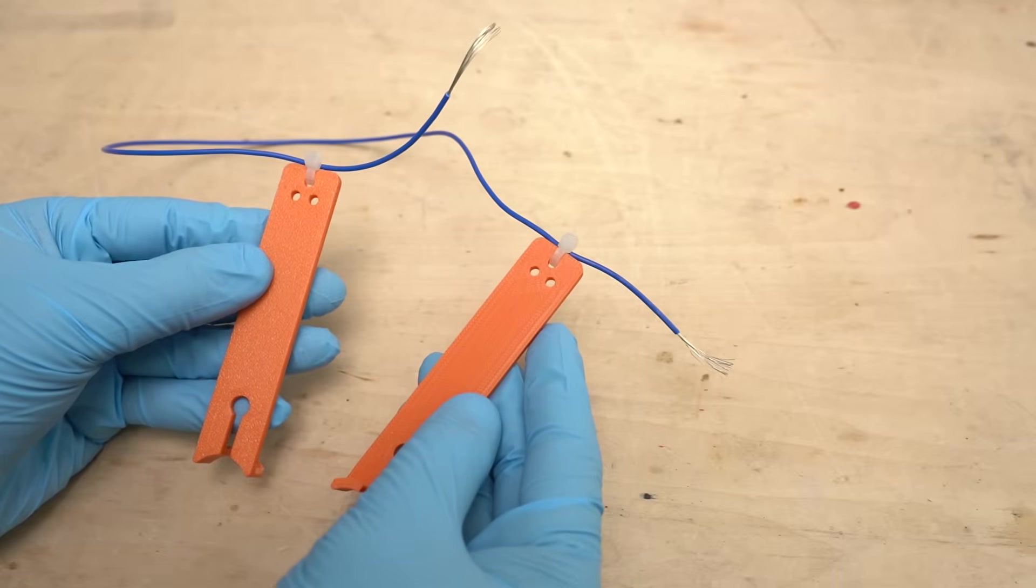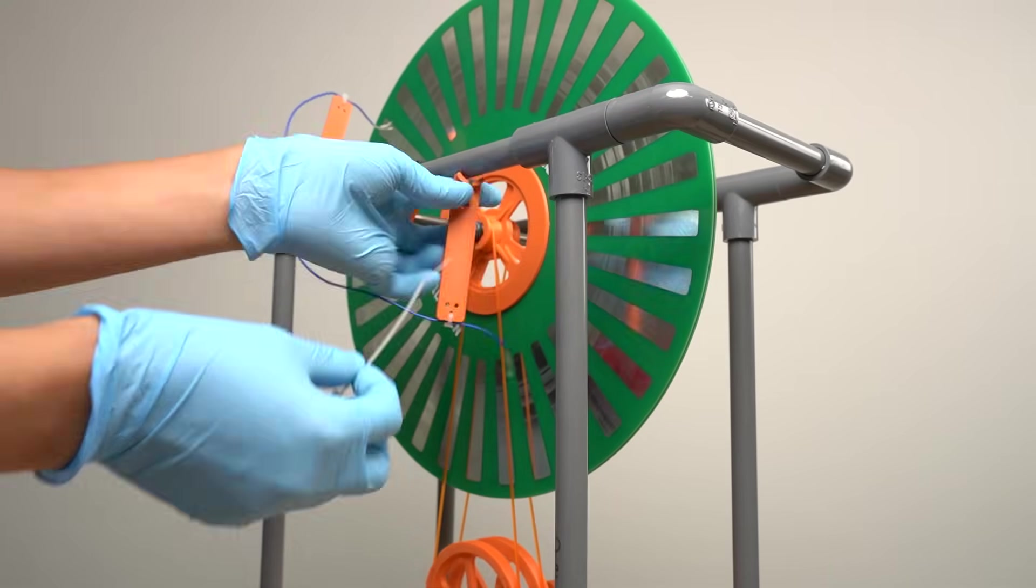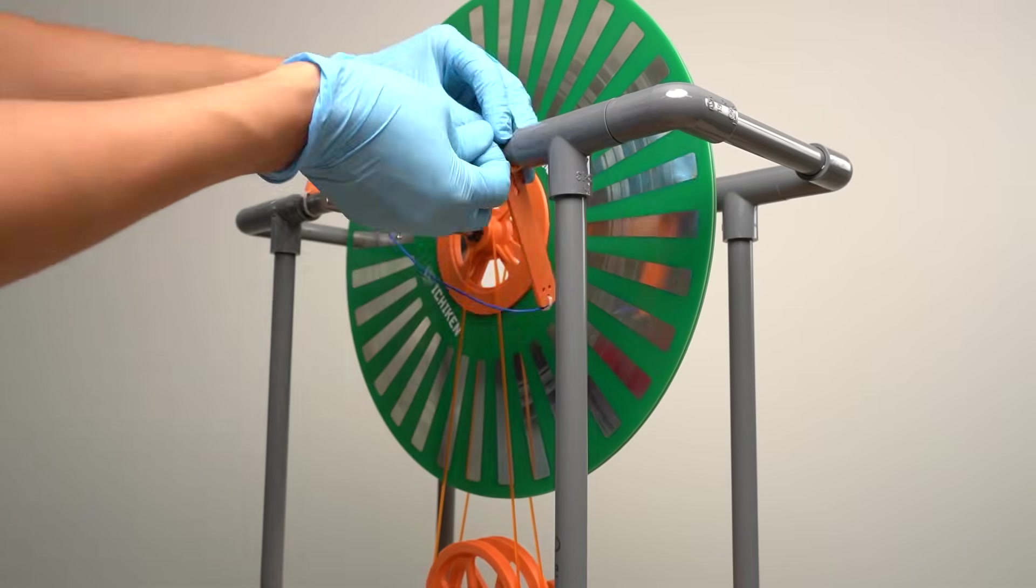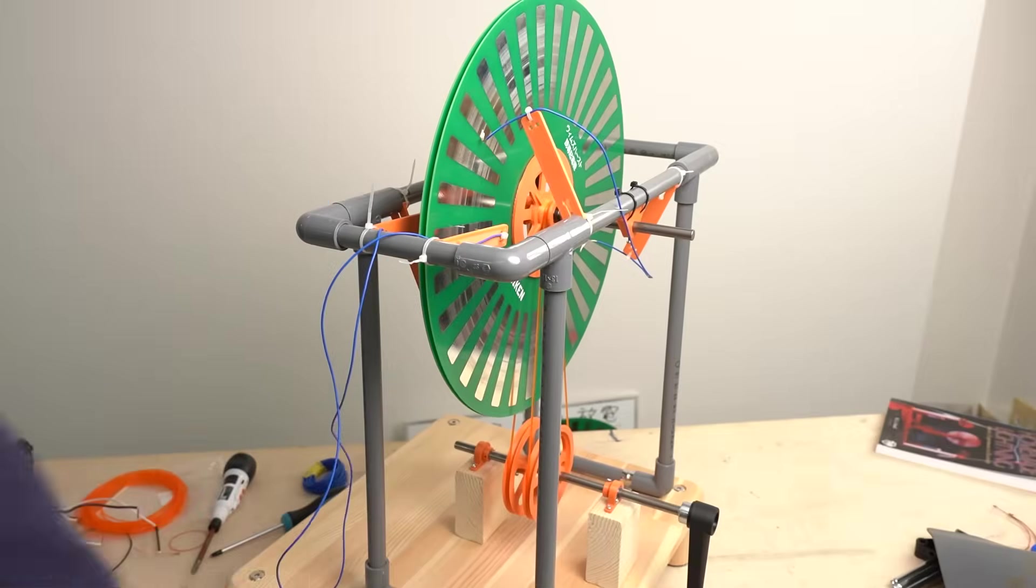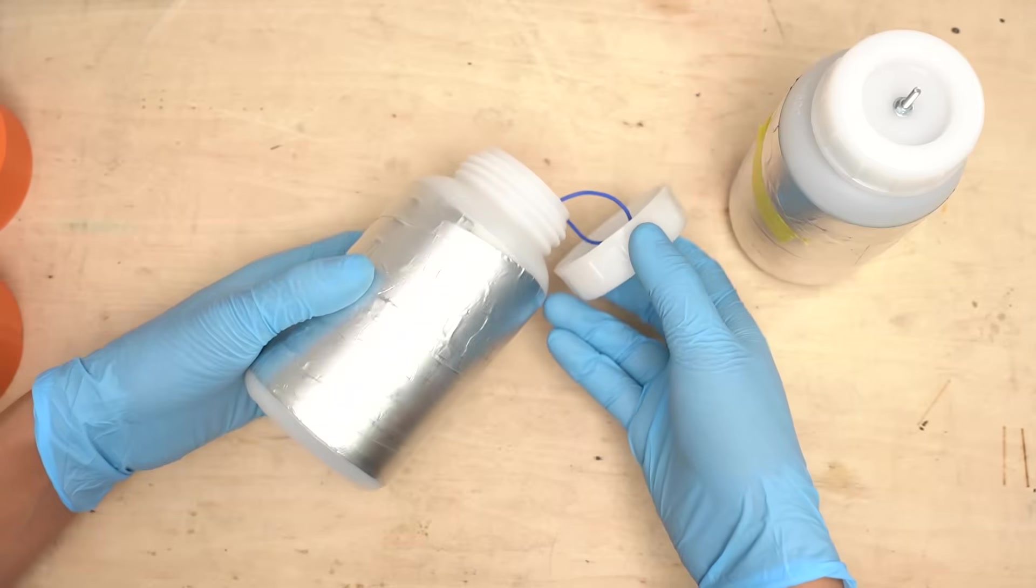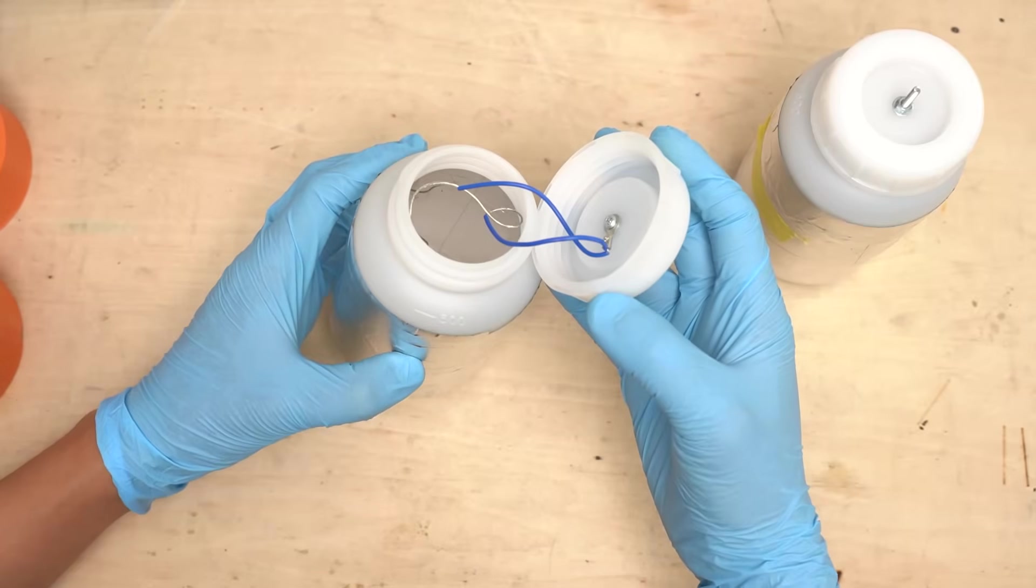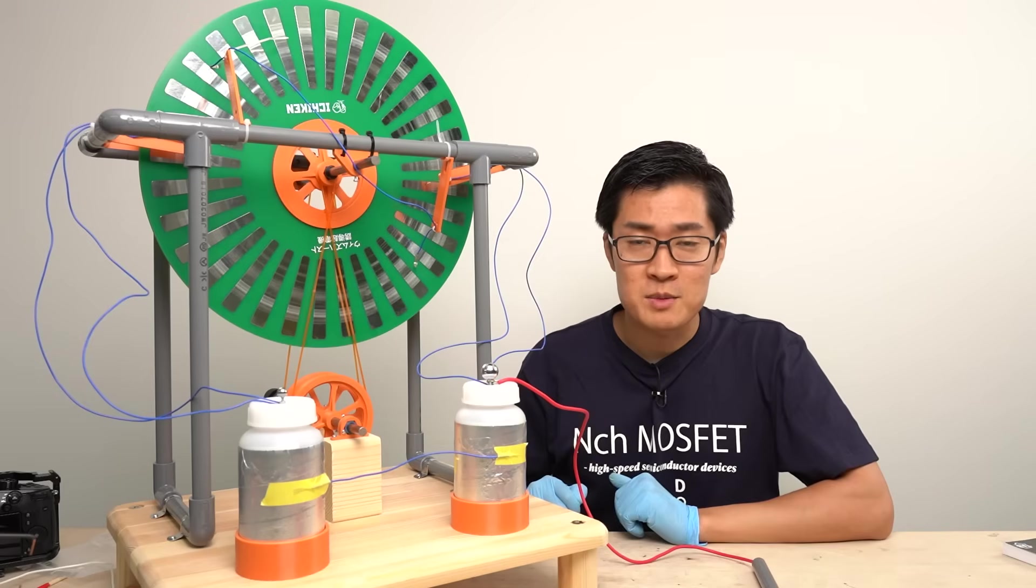Next I made neutralizers. They are wires for transferring the charge accumulated on the disks. I made two and secured them to the PVC pipes. I also made collectors for collecting charge using 3D printed parts. I passed the wires through the parts and secured them to the pipes. These are Leyden jars I prepared in advance. I connected the wires of the collector I made earlier to the jars. The machine is completed.